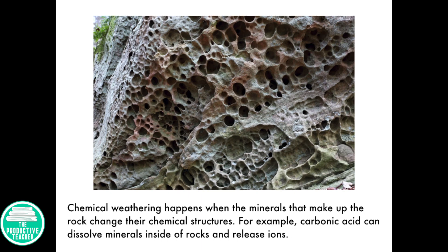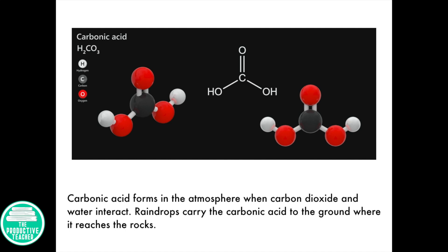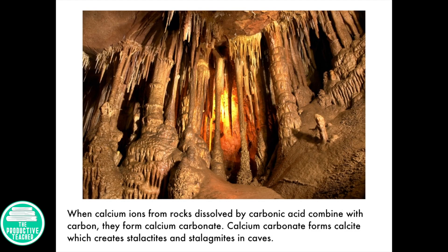Chemical weathering happens when the minerals that make up the rock change their chemical structures. For example, carbonic acid can dissolve minerals inside of rocks and release ions. Carbonic acid forms in the atmosphere when carbon dioxide and water interact. Raindrops carry the carbonic acid to the ground where it reaches the rocks. When calcium ions from rocks dissolved by carbonic acid combine with carbon, they form calcium carbonate. Calcium carbonate forms calcite, which creates stalactites and stalagmites in caves.